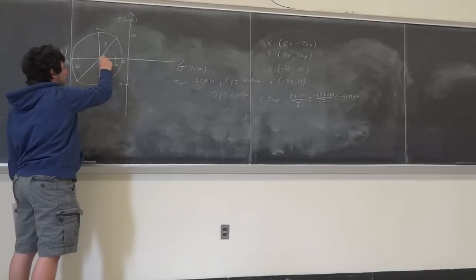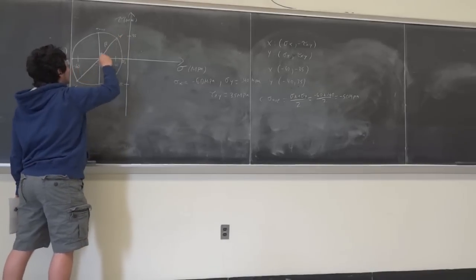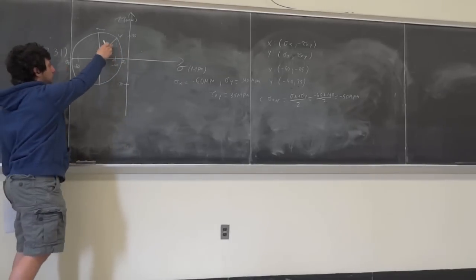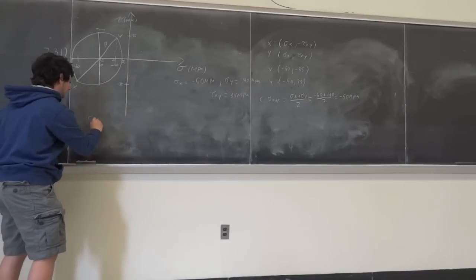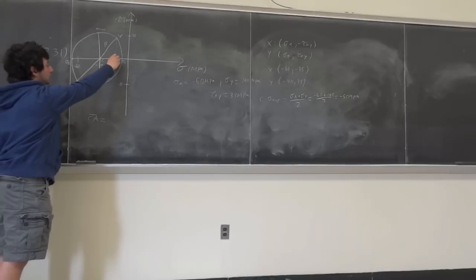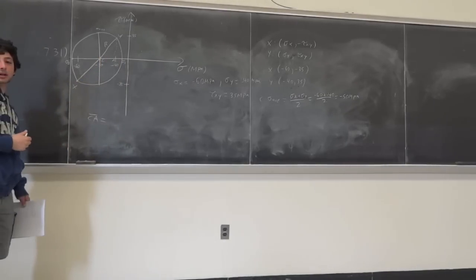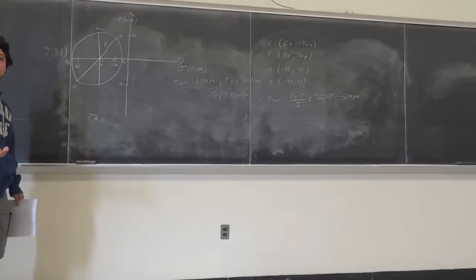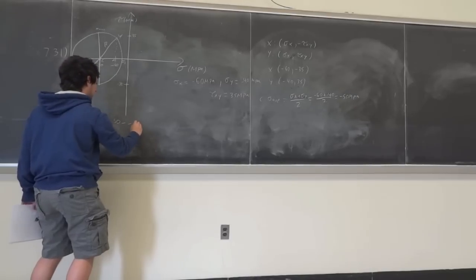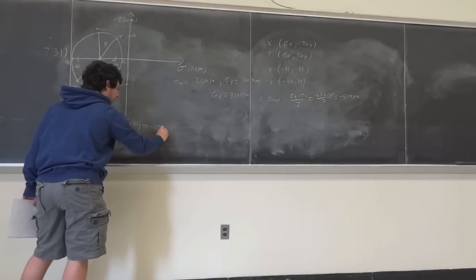We need to know the horizontal distance CA and vertical distance AY. C is at minus 50, and point Y is at minus 40, so CA is minus 50 minus negative 40, which equals negative 10 MPa. And AY is just 35 MPa — that's the shear component. So we have both sides of the right triangle.